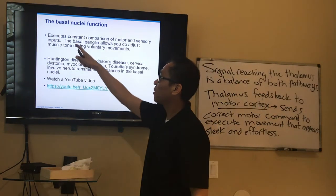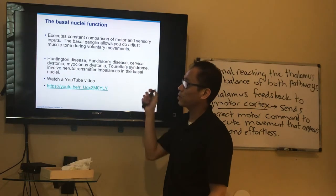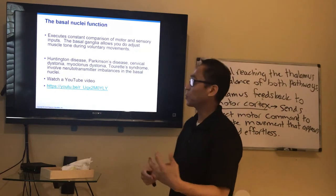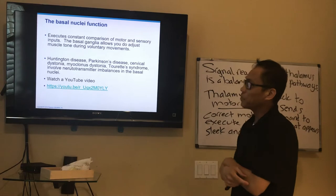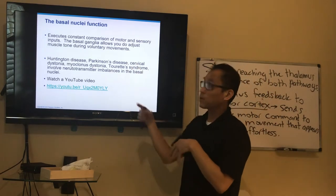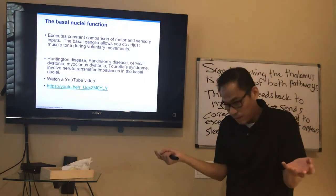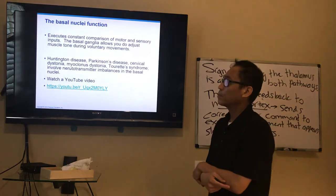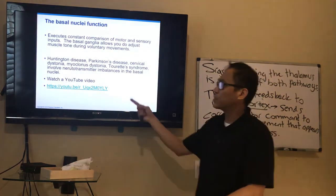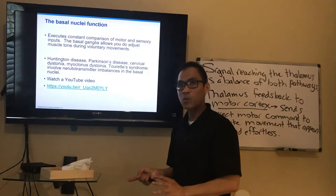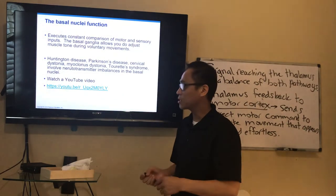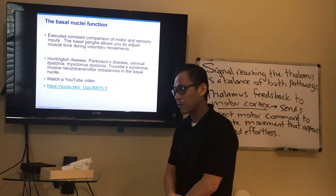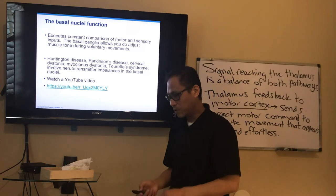The result is a correct motor command to execute movement that appears sleek and effortless — like a dancer executing a rehearsed routine. We're executing constant comparison between motor and sensory inputs, making sure you're not moving incorrectly. This allows muscle tone adjustments during voluntary movements. Diseases affecting this motor loop are called akinesias.